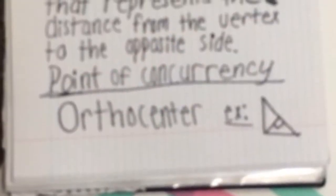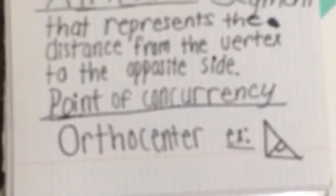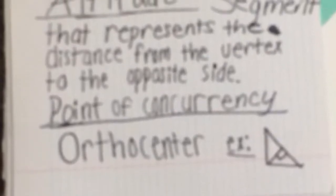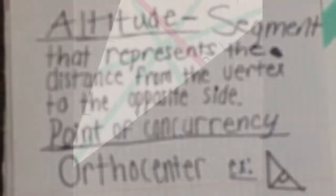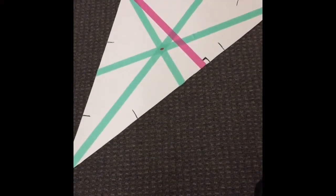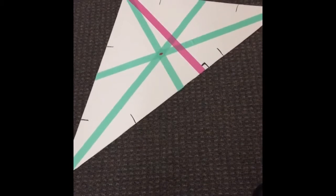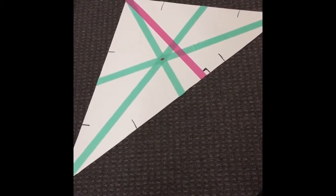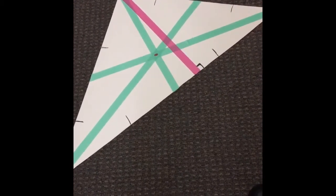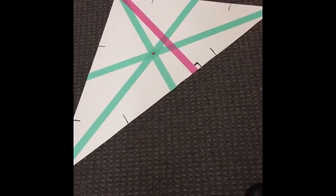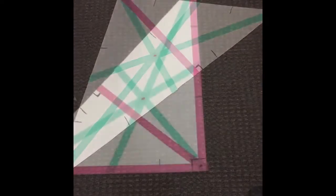An altitude is a segment that represents the distance from the vertex to the opposite side of the triangle. The point of concurrency is known as the orthocenter. The line shown represents the altitude of a triangle. We know this because the right angle symbol, which is on the opposite side of the vertex, shows that this is the shortest distance from the vertex.